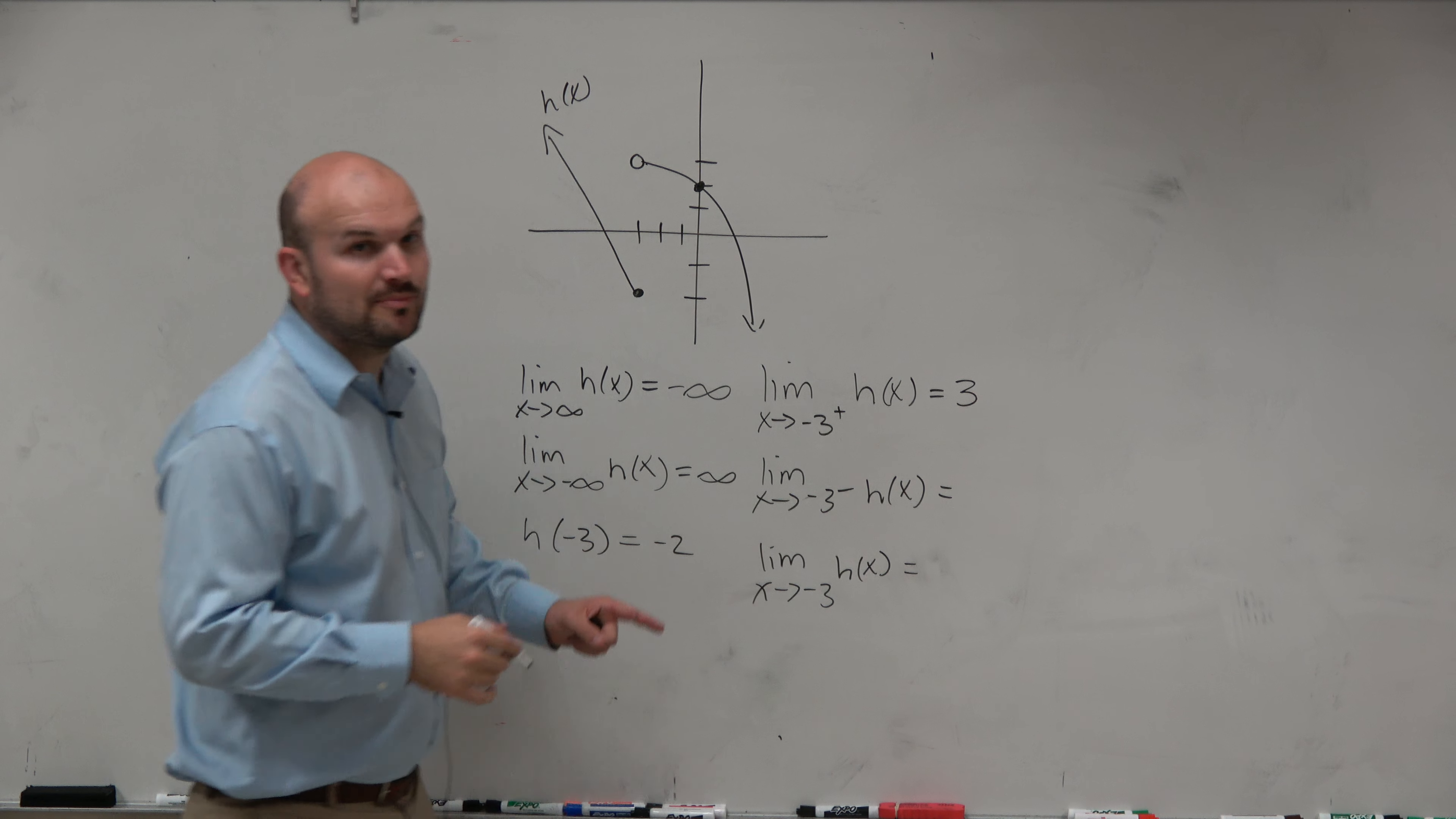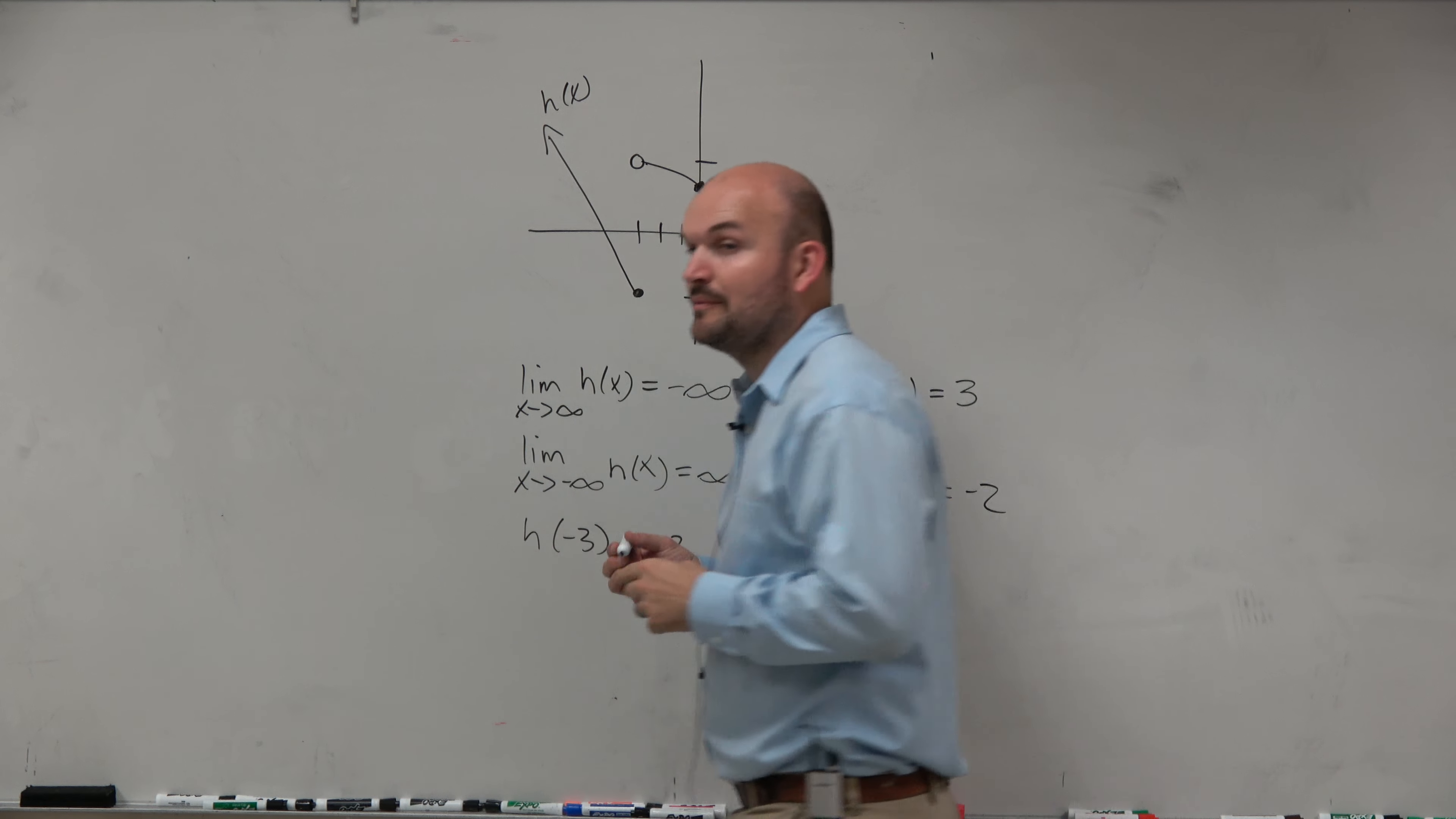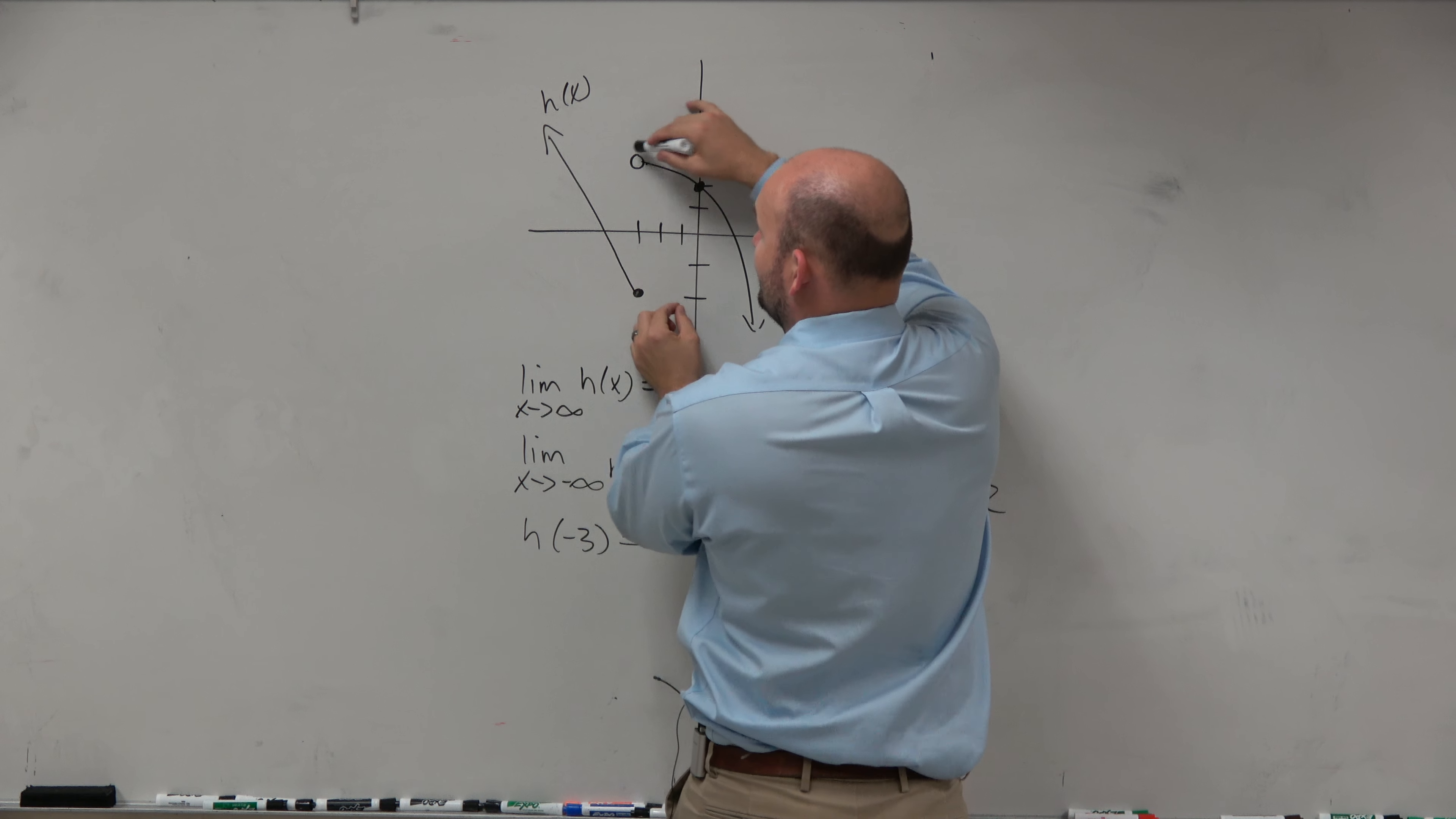What about as we approach negative 3 from the left? So as we approach negative 3 from the left, we get really close to negative 2. What about when we approach negative 3 from the left and the right? Approaching left, approaching the right. Left, right. What value are we getting closer and closer to?